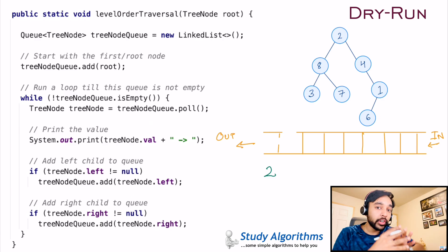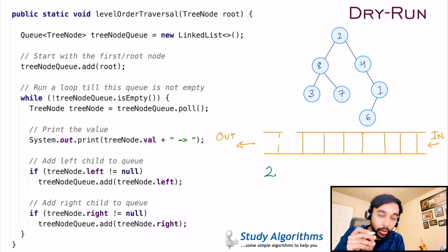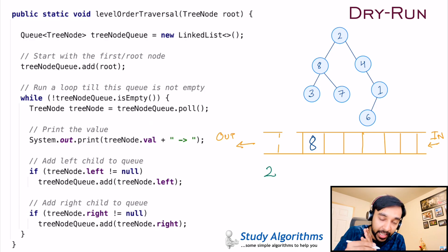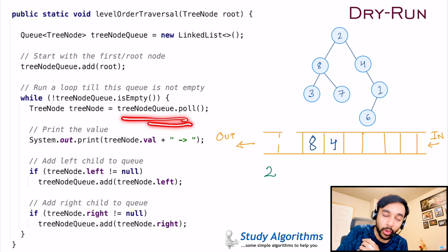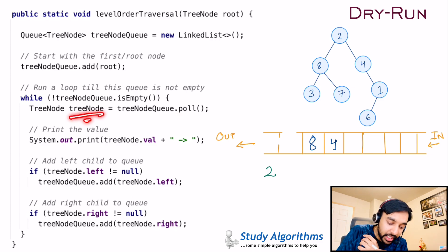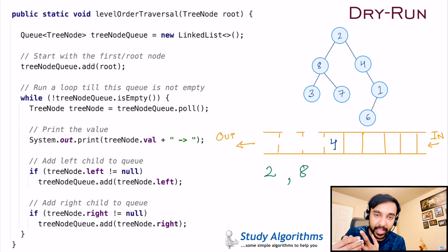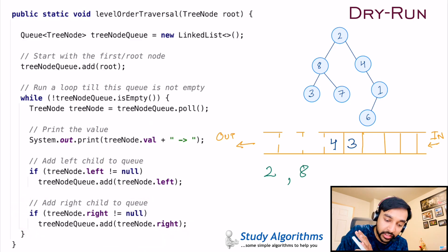Inside the loop, I look into my queue and poll for the first element — I pop an element. This time the tree node gets the value 2, and I print out this value, getting 2 on the screen. Then I add the left child of node 2 to the queue, which adds node 8. Next, I add the right child of node 2 to the queue, which adds 4. The while loop runs again, I do a poll, and this time the tree node gets the value 8. I print it out — 8 appears on the screen. Then I add the left child of 8, which is 3, and the right child of 8, which is 7, to the queue.